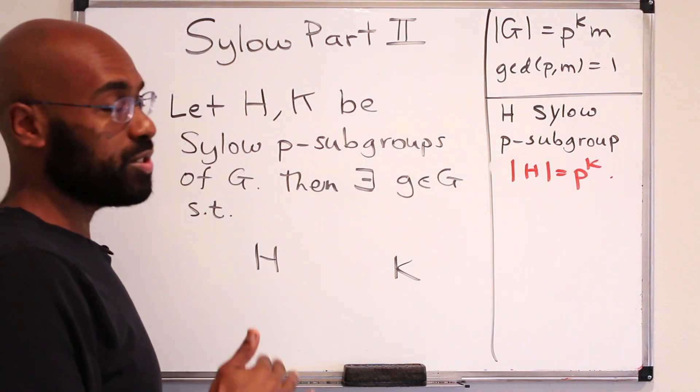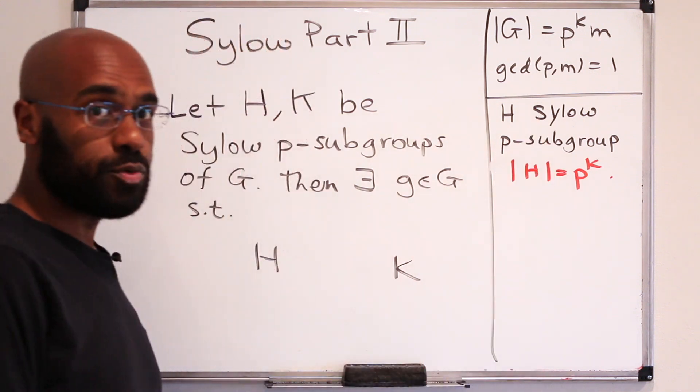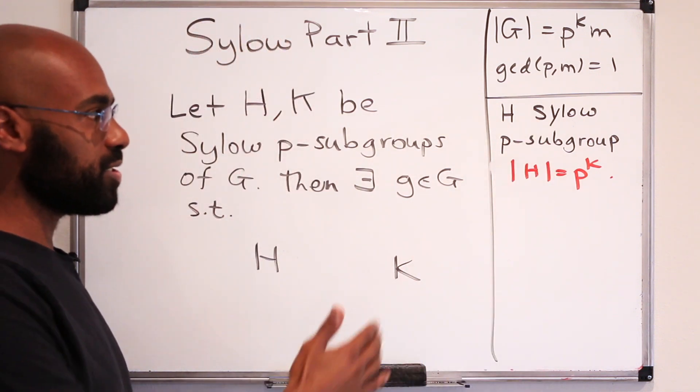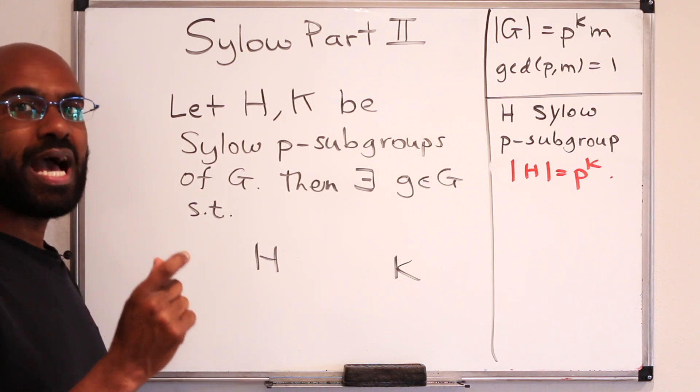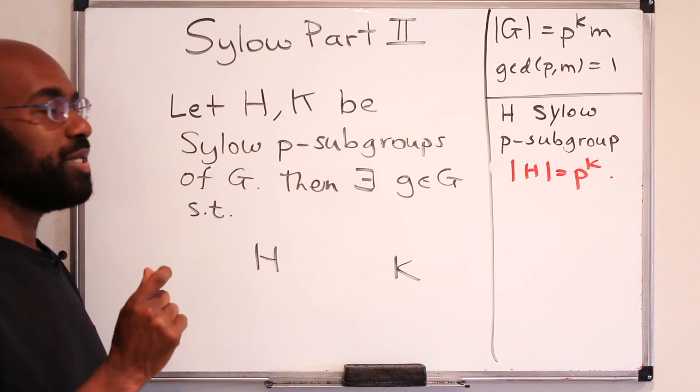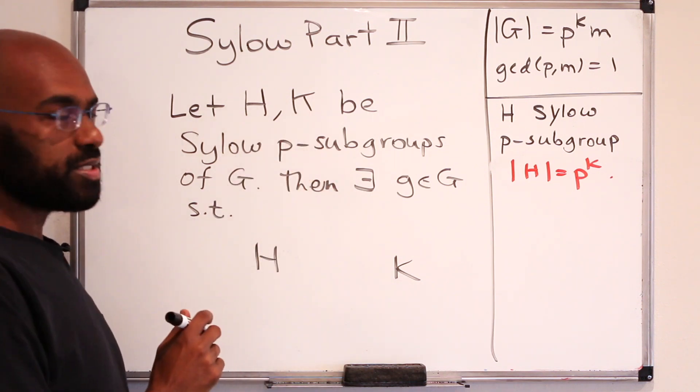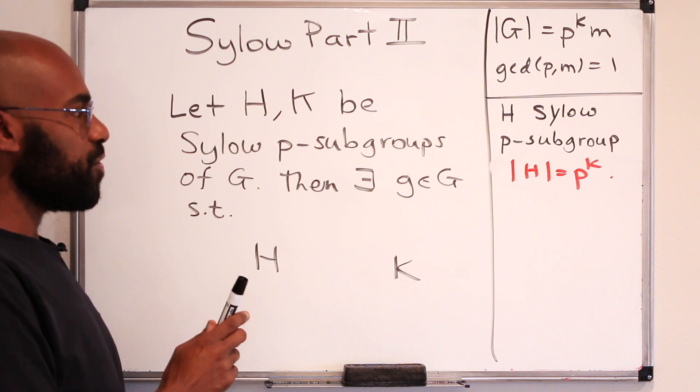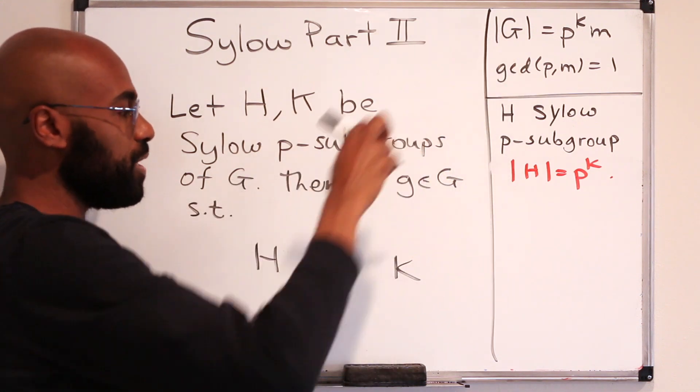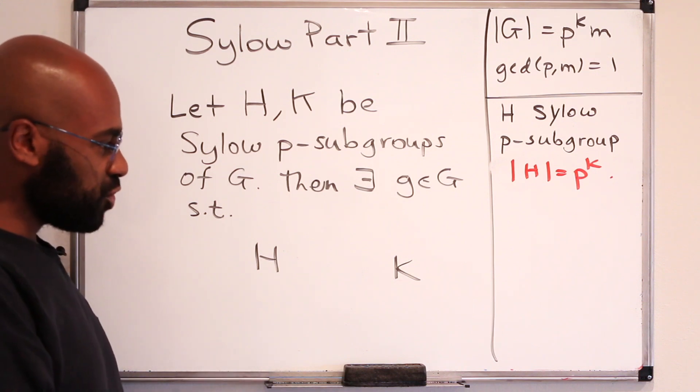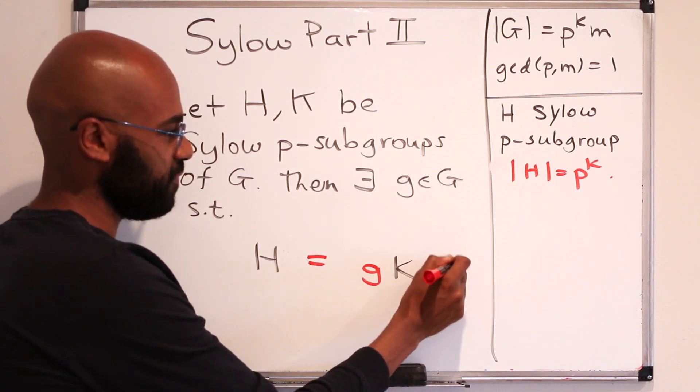The first Sylow Theorem was dedicated to showing that there actually is a Sylow P subgroup. So we have at least one subgroup of this size. The second part of the Sylow Theorem is dedicated to understanding how different Sylow P subgroups are actually related. So let's say we had two different Sylow P subgroups, H and K. Then the theorem says that there's a group element G in your big group so that H can be represented as G times K times G inverse.